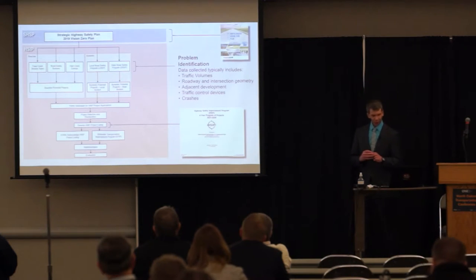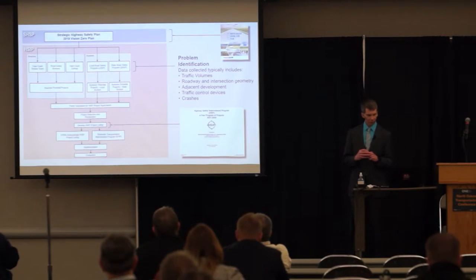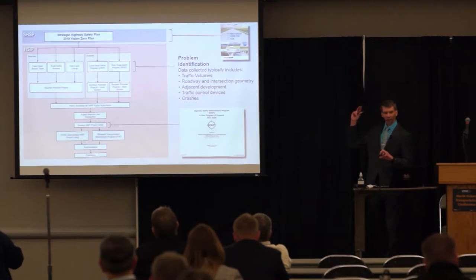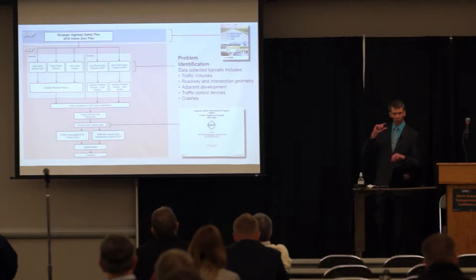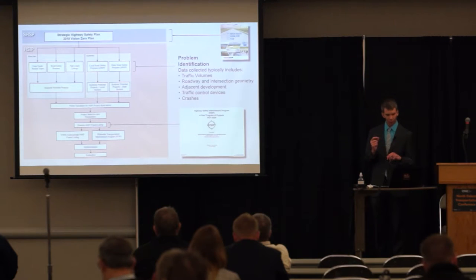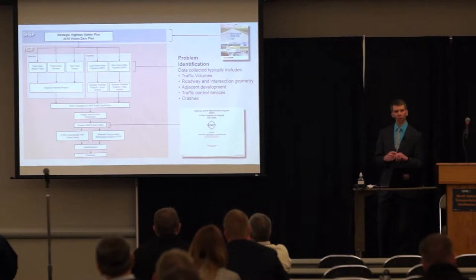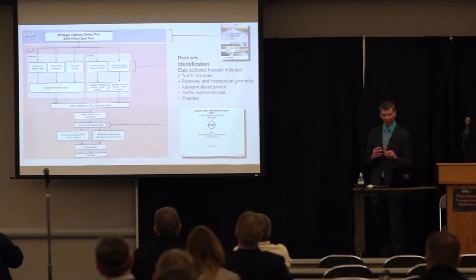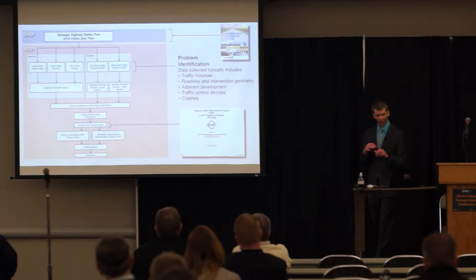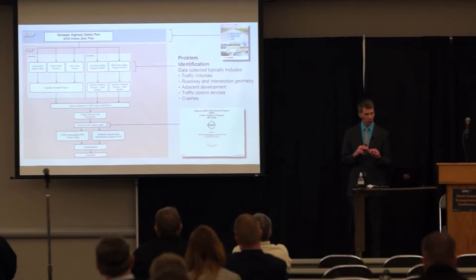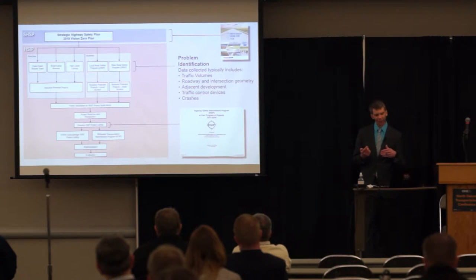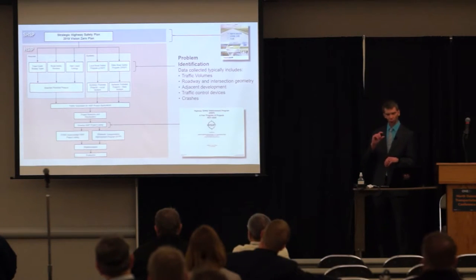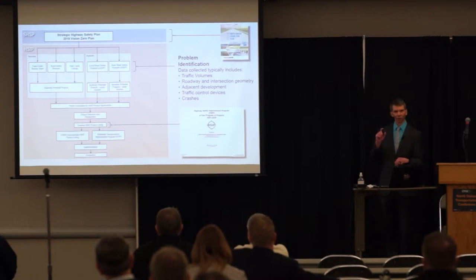This graph shows our Vision Zero Plan at the top. Underneath, the big pink box talks about the HSIP program. The first row is problem identification, where we collect data: traffic volumes, roadway geometry, crashes, traffic control, and many other things to identify the problem. Going further down, you can see the row where we develop the HSIP project listing.